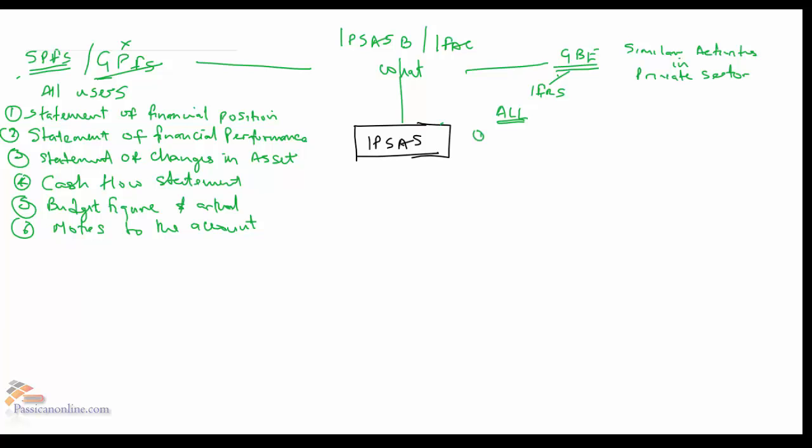Number one, it must be controlled by public sector. Number two, it must have power to contract in its own name. Number three, it must have assigned financial and operational authority to carry on a business.